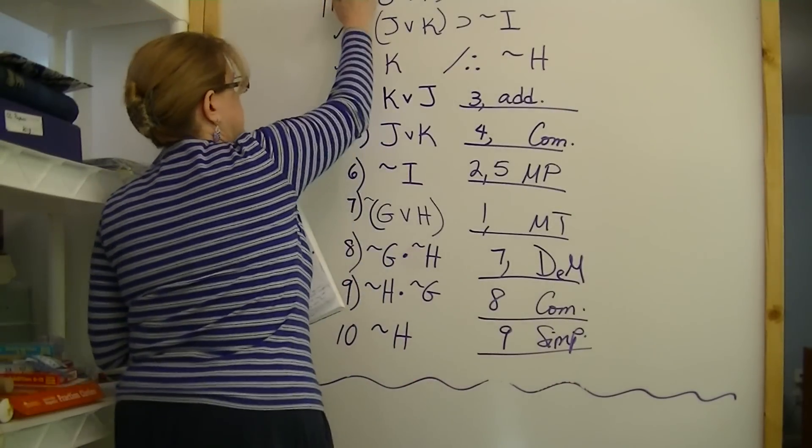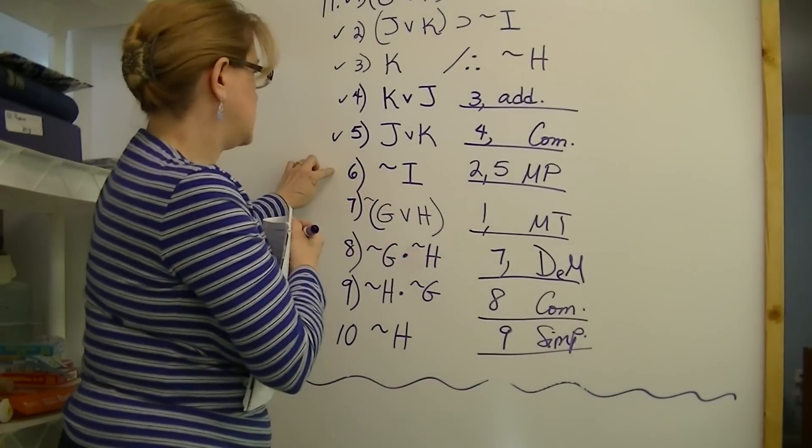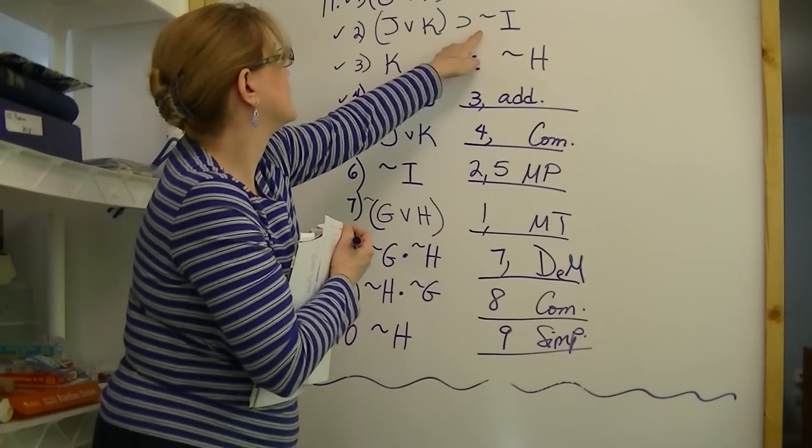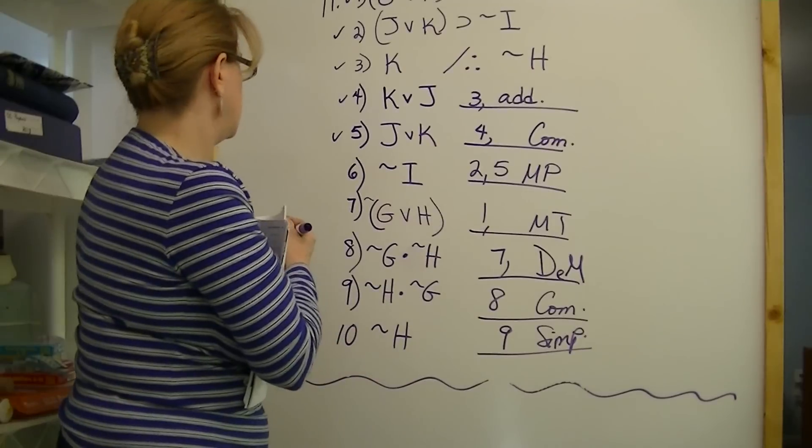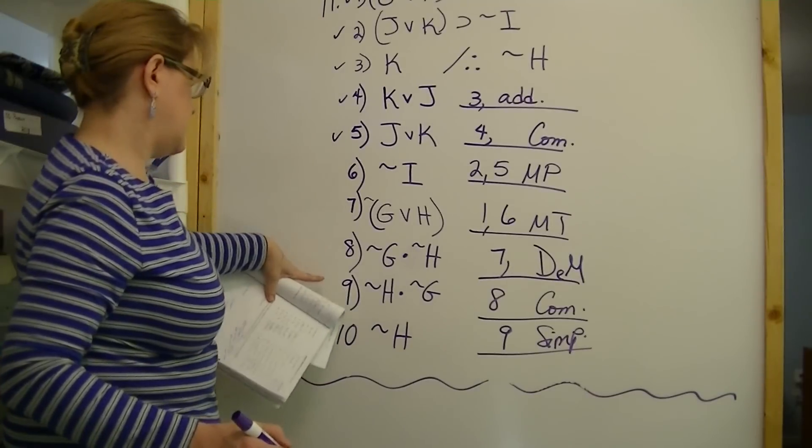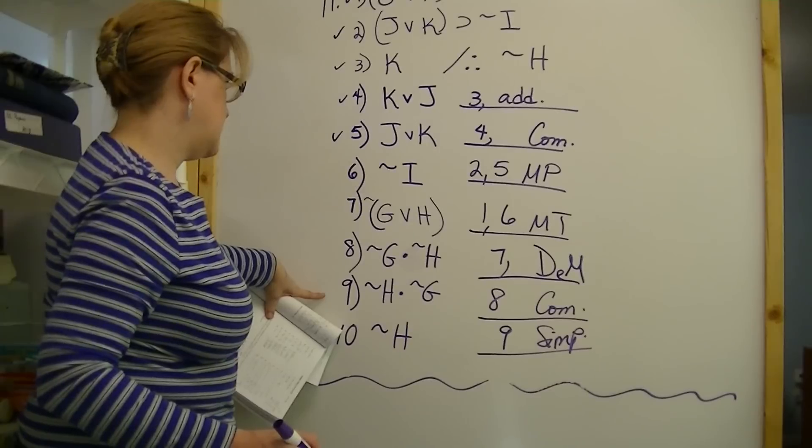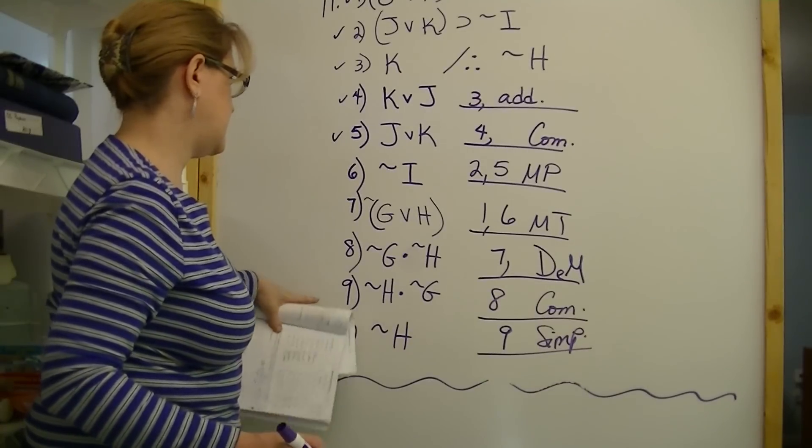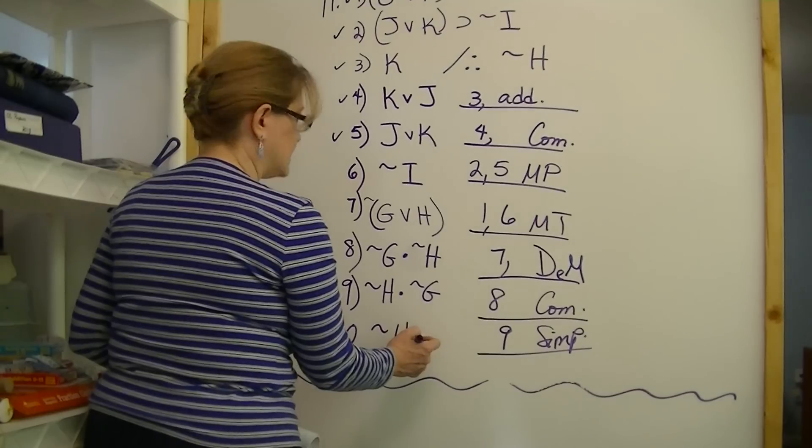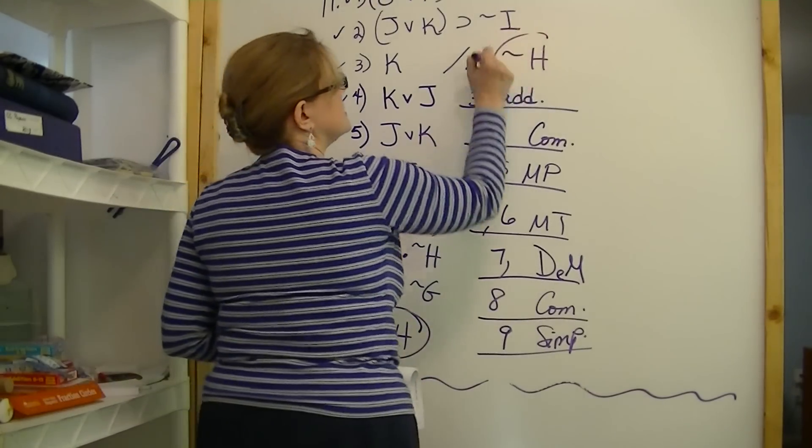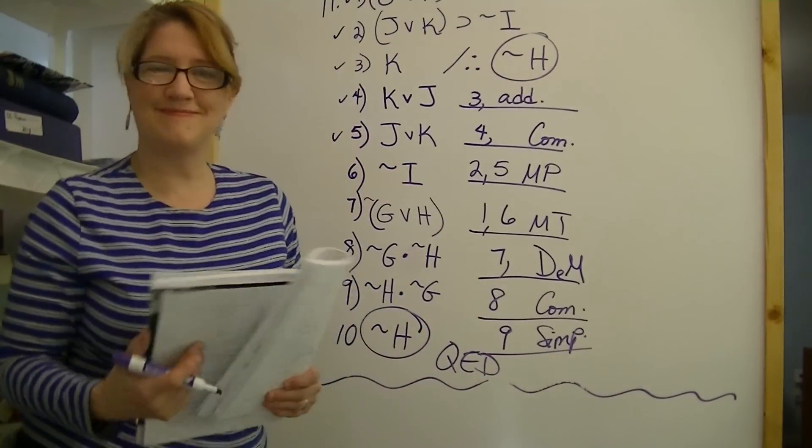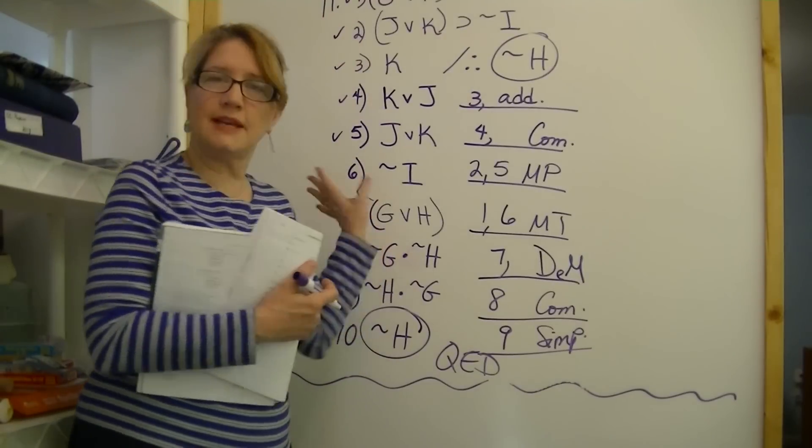Let's see. Yes, I used line one. Six not I. I know I used that somewhere. I used that in my Modus Tollens. So that was one and six. DeMorgan's. Commutation. And then I simplified. And I am done. This, now that I've simplified it, the not H here is the same as this. I have proven it. I'm finished.